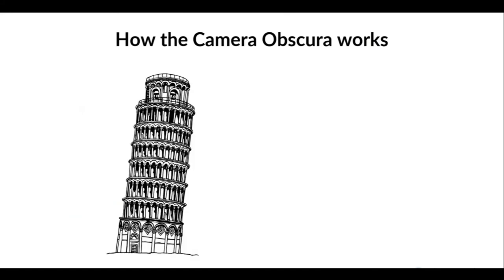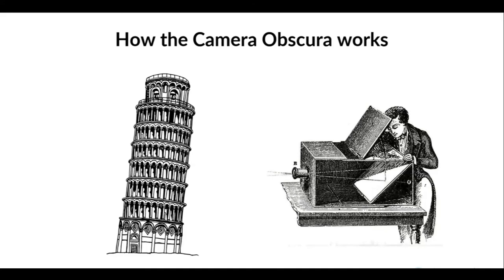But they were also used by architects and by mathematicians as well. So they would point the camera obscura, similar to this one here, at something, in this case the Leaning Tower of Pisa, and it would project the image onto a piece of glass.